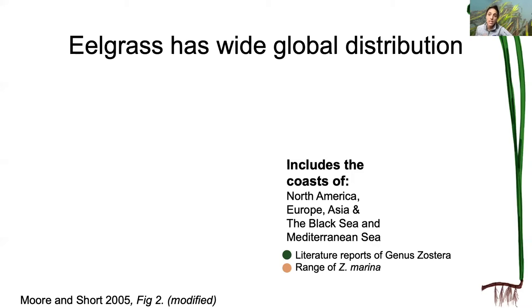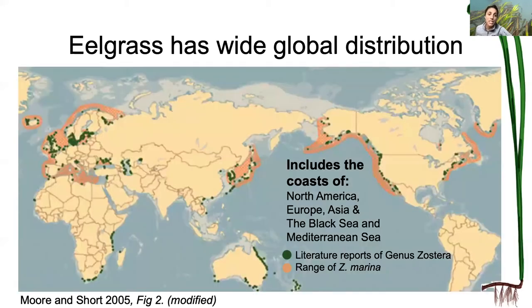The map shows in green the literature reports of the genus Zostera, and in a peachish-orange color you'll see the range of Zostera marina, or eelgrass. As you can see, it is very, very common in the northern hemisphere.